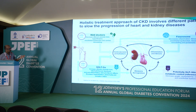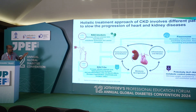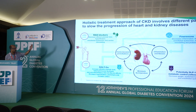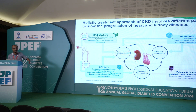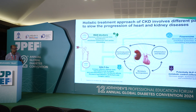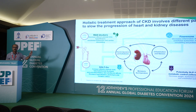Taking it further, we now have therapies targeting all three pathways: RAS inhibitors, SGLT2 inhibitors, finerenone, and now GLP-1 RAs. The FLOW trial — which I believe was just published in print a few days ago — shows that GLP-1 RAs can also retard the progression of chronic kidney disease.